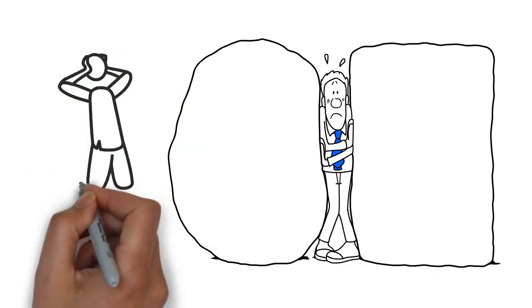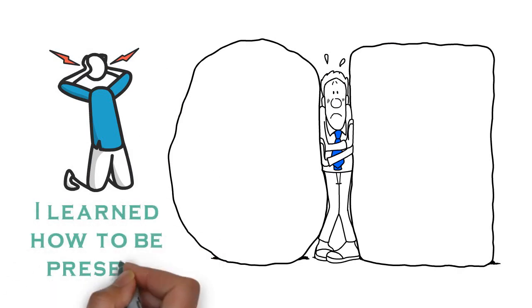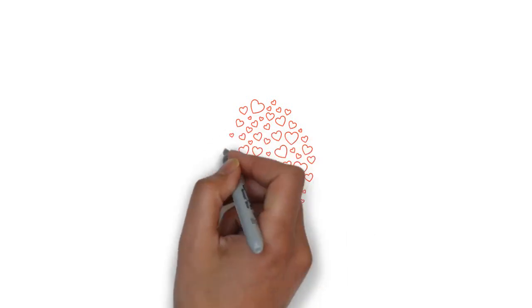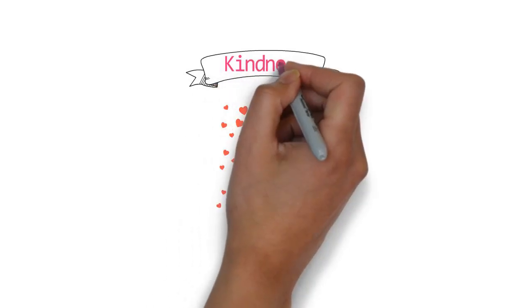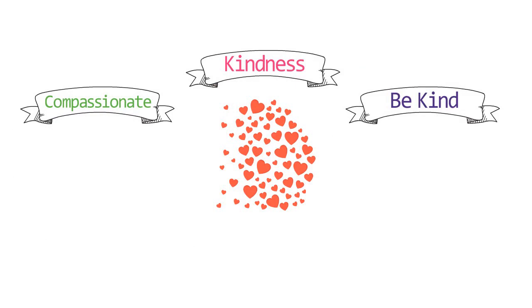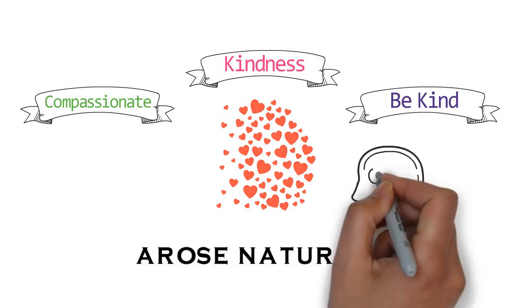That's where love arises naturally. You can put a lot of different words attached to it—you can say kindness, be kind, compassionate—but that stuff to me arose naturally once my mind started settling.